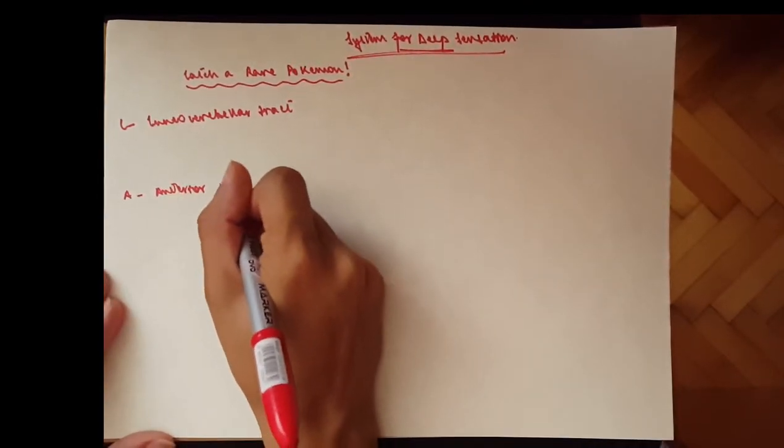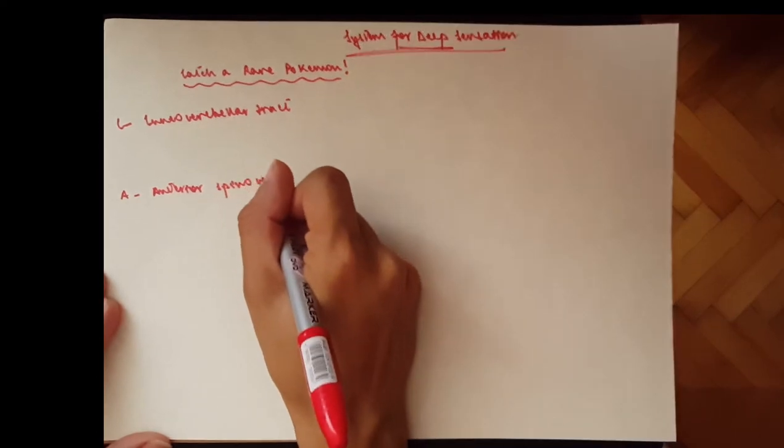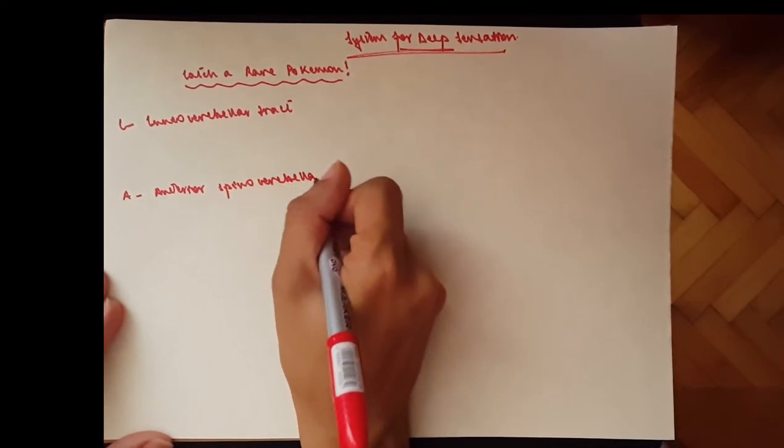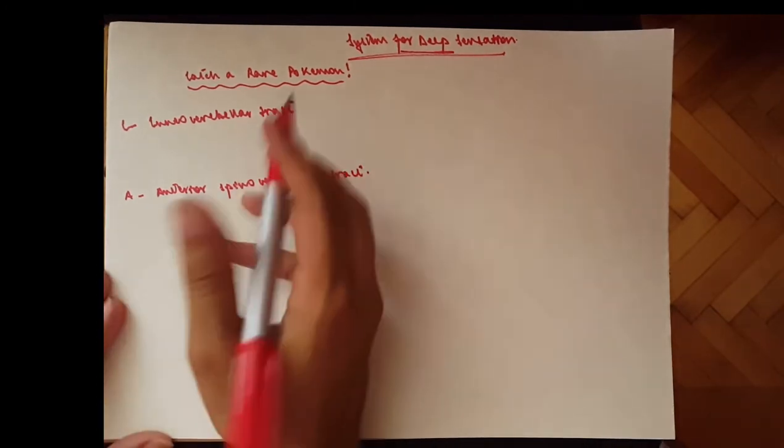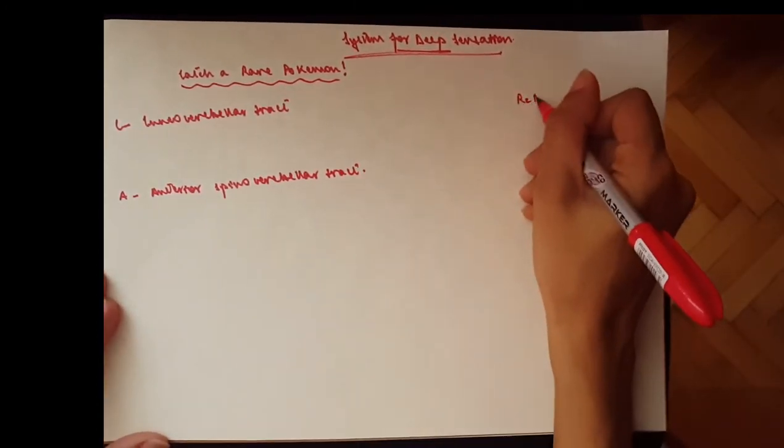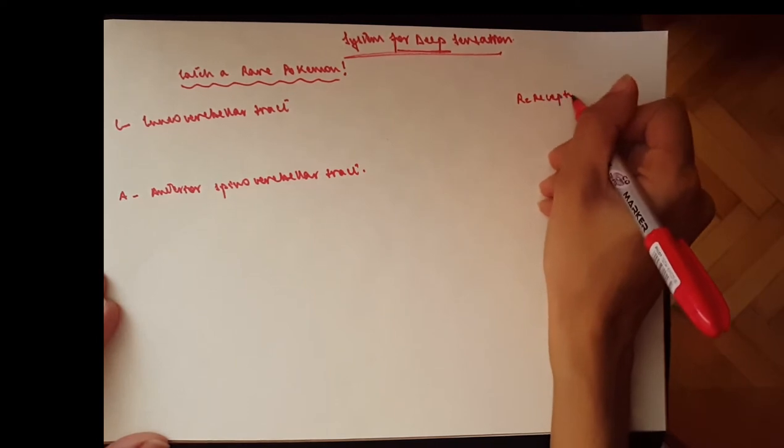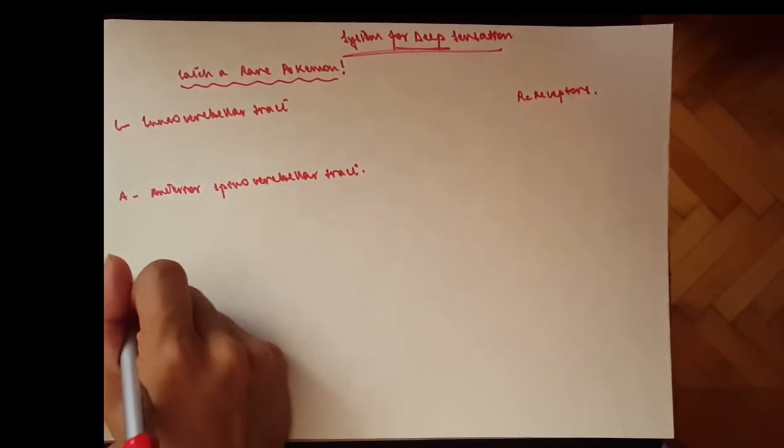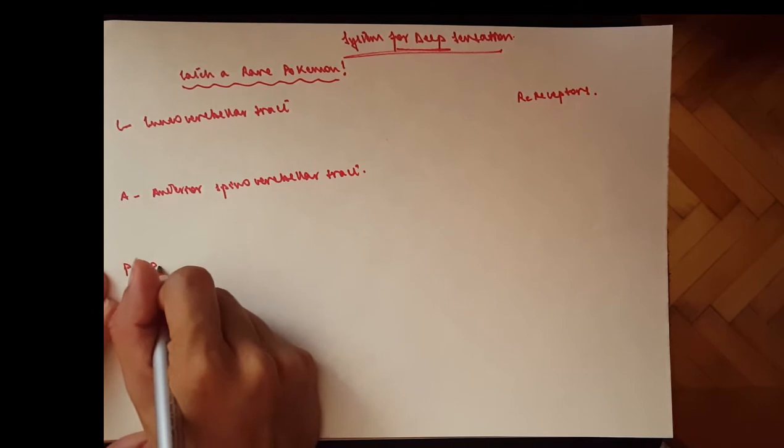And then we've got rare, which is the receptors. I'm going to write it here. And then P would be a third tract, and that is the posterior spinocerebellar tract.